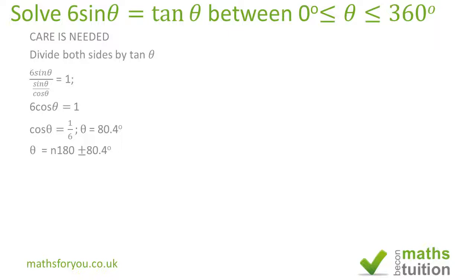Because tanθ repeats itself every 180 degrees, we have n times 180 plus or minus 80.4 degrees. This gives us values of 80.4 degrees and 279.6 degrees in the first and fourth quadrants.